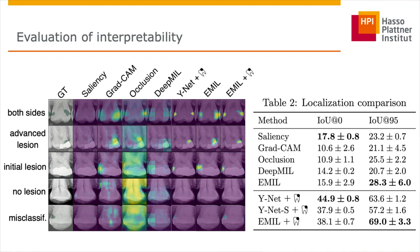We evaluate the interpretability of our model both qualitatively as well as quantitatively compared to various well-known post-hoc explainability methods. As shown in the table as well as in the first three rows of the figure, EMIR shows comparatively high localization performance. In the fourth row of the figure, we see that EMIR is also able to indicate when there is no lesion in the image. In addition, we observe that EMIR tends to highlight caries even though the evidence is not always strong enough to pass the classification threshold, as exemplified in the fifth row of the figure.